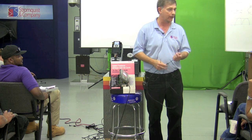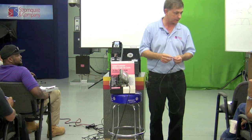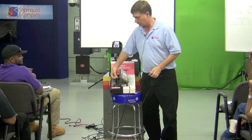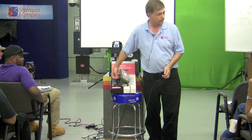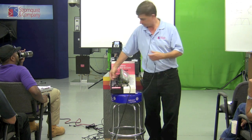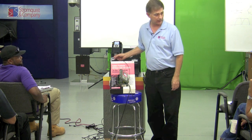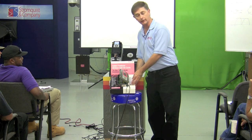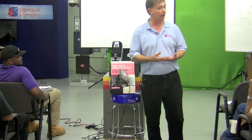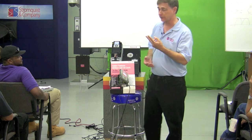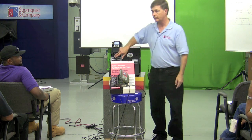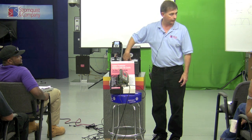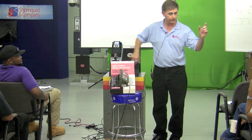All it takes is two conductors, shielded, hooked to your zero to ten volt DC output across terminals two and three for analog input one. For permission to run you need a switch or time clock with dry contacts across terminals six and eight. That's all we need.